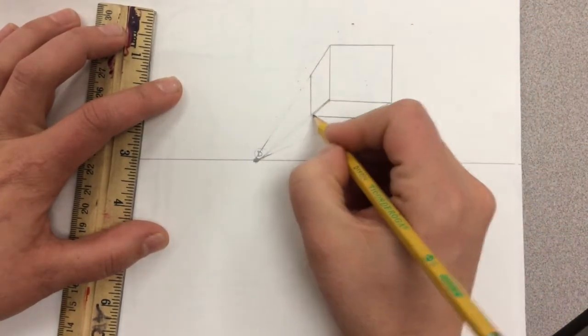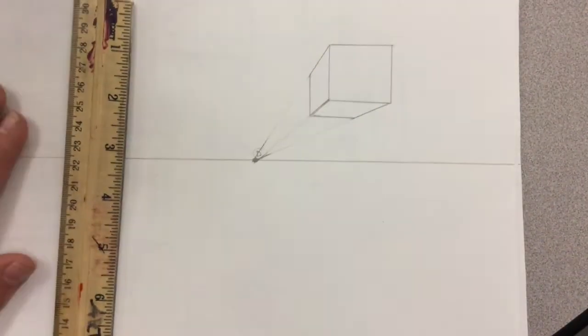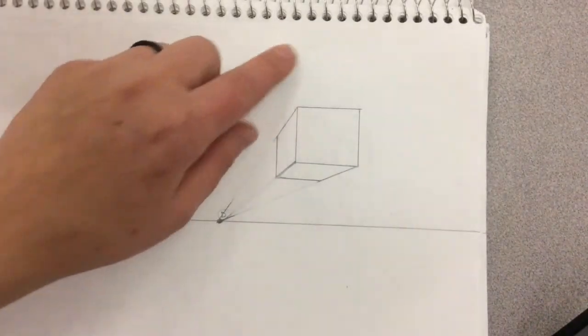In this case, we're looking at it from a worm's eye view looking up at it because it's above the horizon line.